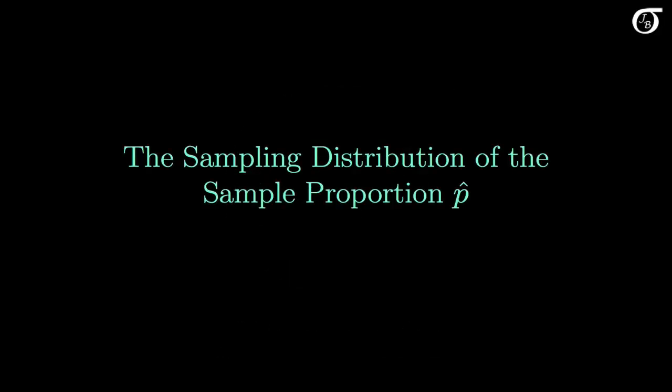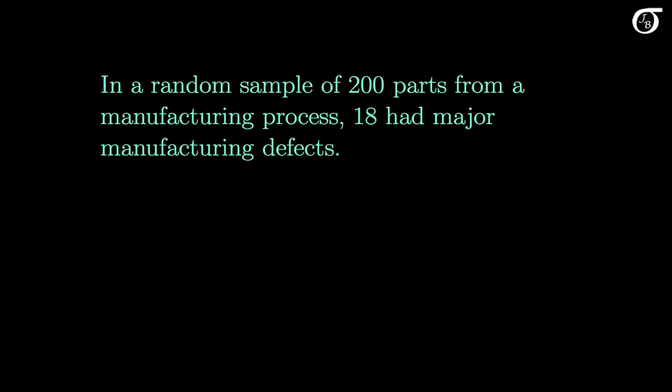Let's look into the sampling distribution of the sample proportion P-hat. Here's a quick example: in a random sample of 200 parts from a manufacturing process, 18 had major manufacturing defects. Here P-hat, the sample proportion, is 18 out of 200, or 0.09.